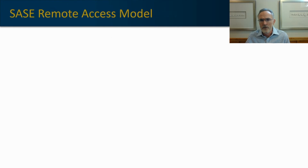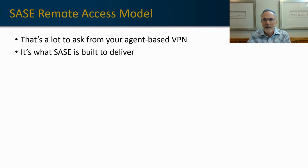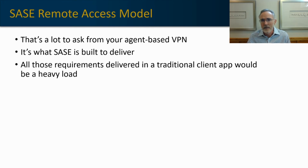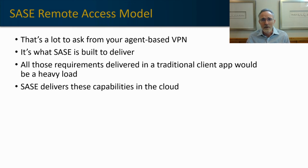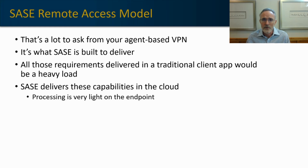Traditional remote access solutions can't deliver all of these requirements — you need a SASE model to provide all of those capabilities. If we tried to build an agent-based application that did everything on that list, it would be a very heavy app that would take its toll on the endpoint. But SASE delivers these capabilities in the cloud, so we don't have to worry about processing power on the endpoint. We have a very light application that encrypts all traffic, sends it to the nearest remote access cloud access point, and that's where all the intelligence and processing happens — off the endpoint, in the cloud, but within close geographic proximity to avoid introducing delay or a poor user experience.